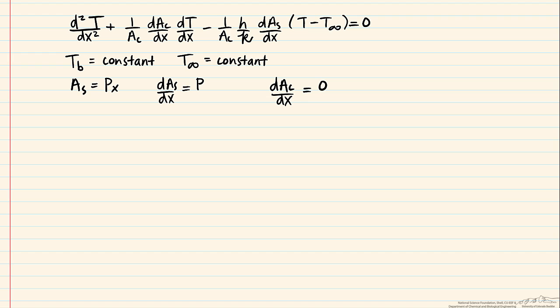So now we're left with d squared T dx squared minus h times P, which is that perimeter, divided by that thermal conductivity times the cross sectional area, all multiplied by T minus T infinity equals zero.